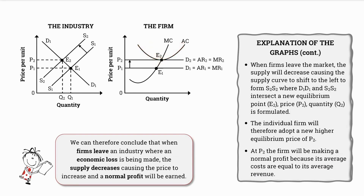We can therefore conclude that when firms leave an industry where an economic loss is being made, the supply decreases, causing the price to increase, and a normal profit will be earned.